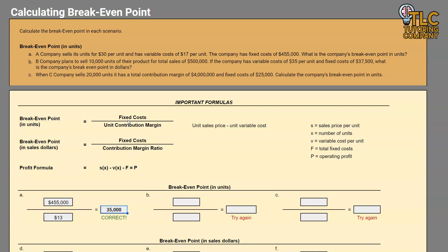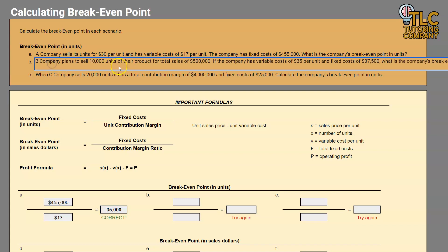Let's take a look at example B — we're going to make it a little more challenging. In this example the company plans to sell 10,000 units and has total sales of $500,000. Variable costs are $35 per unit and fixed costs are $37,500. What is the company's break-even point in units? Remember our goal is to find how many units are needed to break even, not how many we expect to sell.